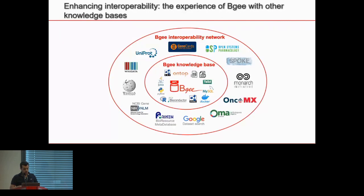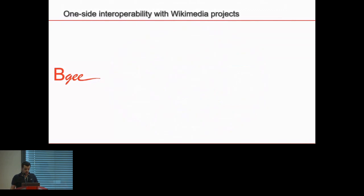To exemplify these different interoperability approaches, I will show use cases involving the BG knowledge base — a subset of the interoperability network currently in place. I will focus on three of them: the interoperability between BG and Wikimedia projects, secondly with GeneCards, and thirdly with the Google Dataset Search tool.